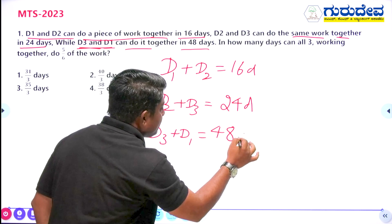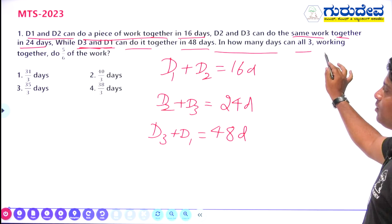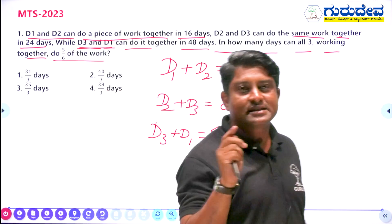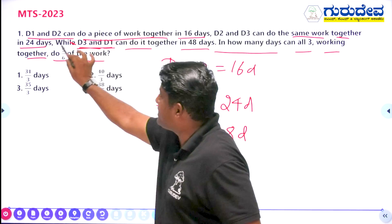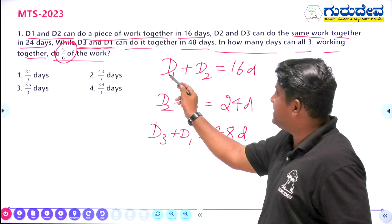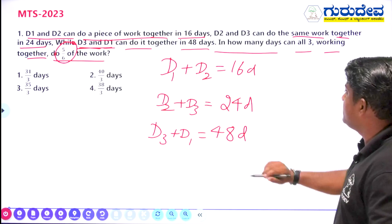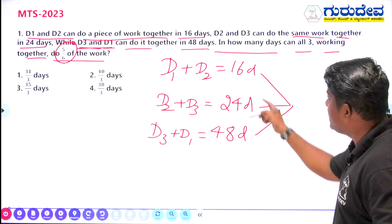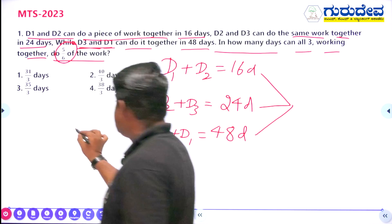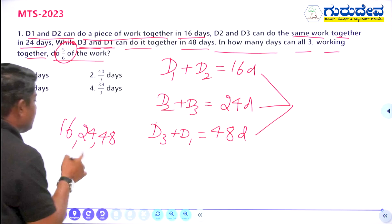The question asks: in how many days can all three working together complete 5/6 of the work? Note that D1, D2, and D3 are each repeated two times in the given pairs. The first step is to calculate the LCM of 16, 24, and 48.